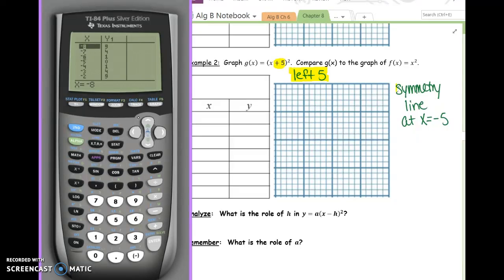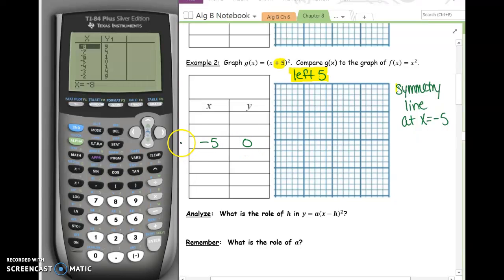Negative 5 is where our symmetry line is. So negative 5, 0 is going to be our vertex. And I'm going to go ahead and highlight that as well. I'm going to highlight everything that has to do with that plus 5. I need a couple of points on either side of negative 5. So in your table, a couple of points above negative 5, a couple of points below negative 5.